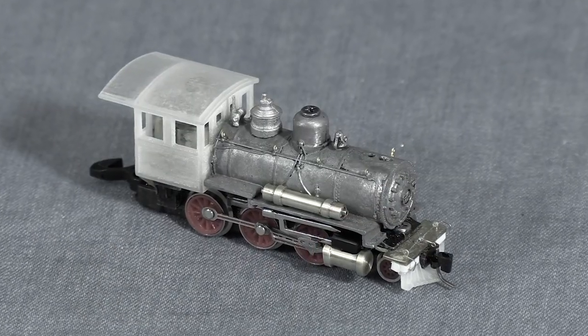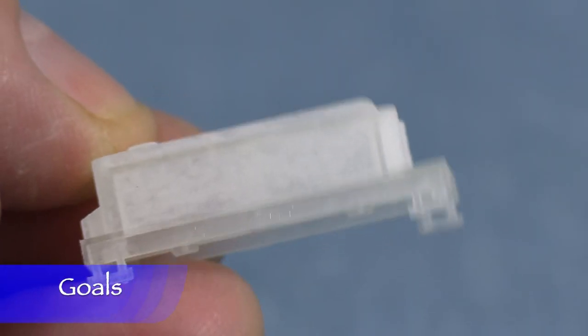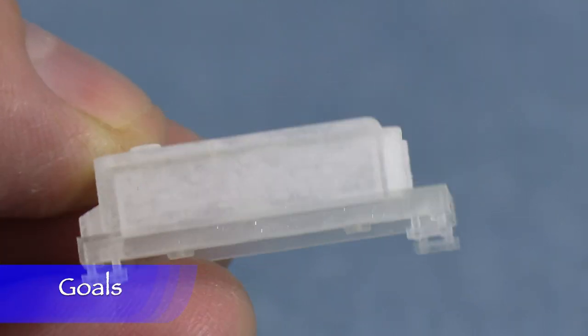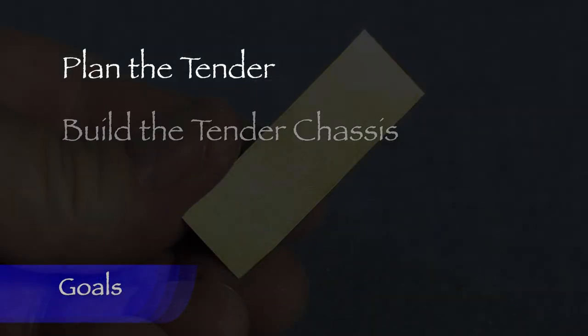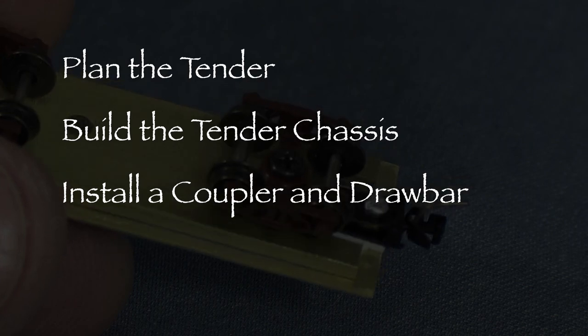The model still needs a tender, so I'll tackle that next. My goals for this episode are to plan the tender, build the tender chassis, and install a coupler and drawbar.